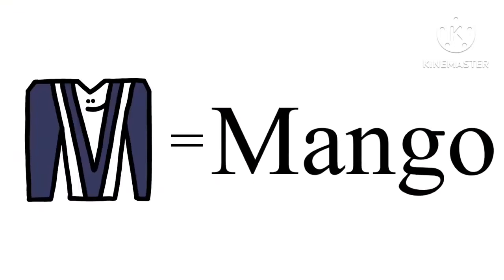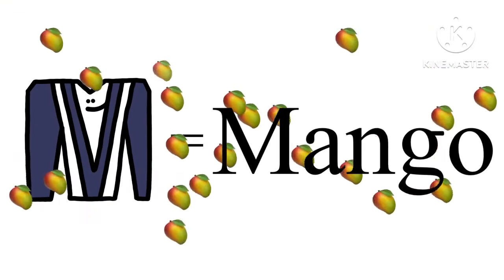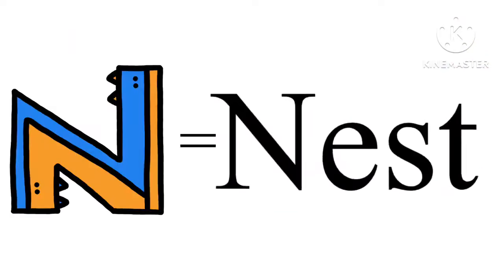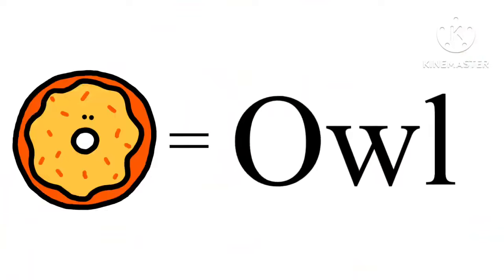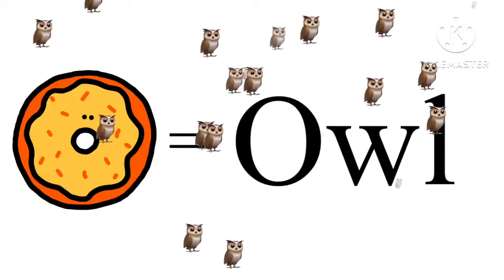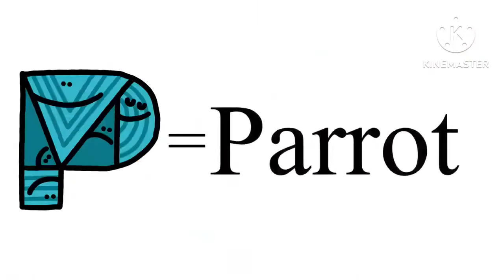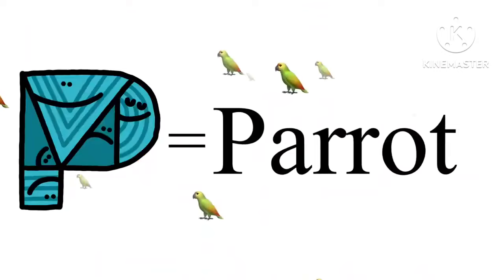M is for Mango. N is for Nest. O is for Owl. P is for Parrot.